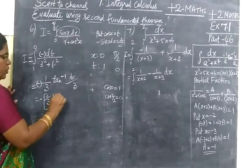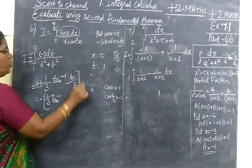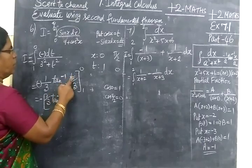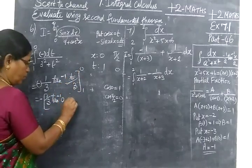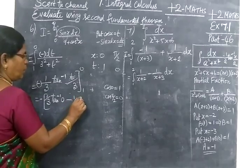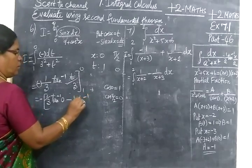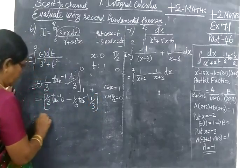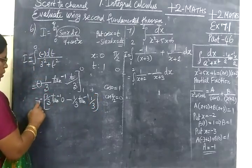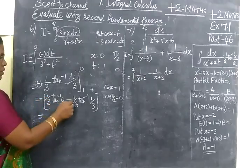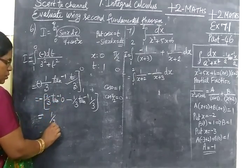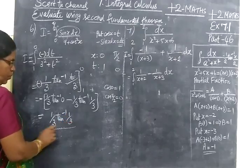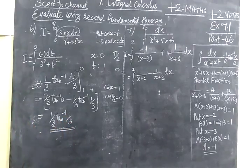Tan inverse, the limit is greater: 1 is 0. Now you apply the limit. T is 0 minus lower limit, upper limit minus lower limit. T is 1 by 3. Tan 0 is 0. Take minus inside, minus minus plus. So 1 by 3.